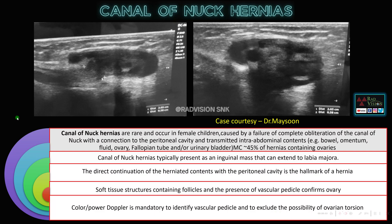Next, what are Canal of Nuck hernias? Here you can see herniation of the ovary with follicles along the pedicle into the inguinal region or labia majora region. This is called Canal of Nuck hernia, where the contents are directly communicating with the peritoneal cavity. In this case the contents were an ovary, and color Doppler and power Doppler should be used to rule out the possibility of ovarian torsion in such cases.